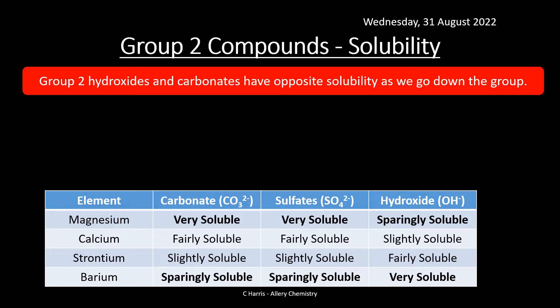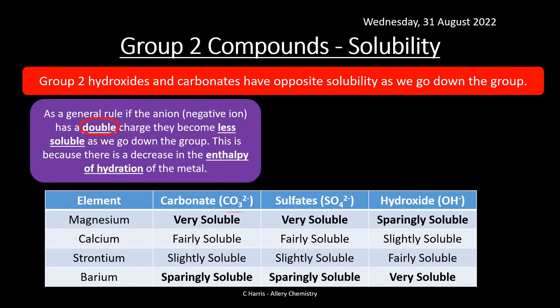Group 2 hydroxides and carbonates have opposite solubility trends as we go down the group. Group 2 contains magnesium, calcium, strontium, and barium. As a general rule, if the anion has a double charge — such as carbonates and sulfates — they become less soluble as we go down the group, because there is a decrease in the enthalpy of hydration of the metal.